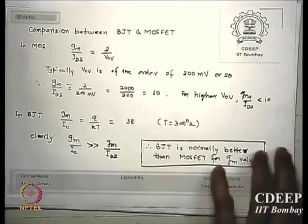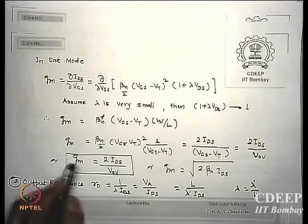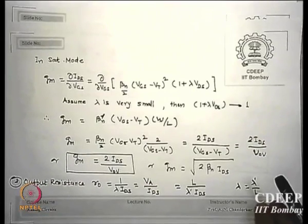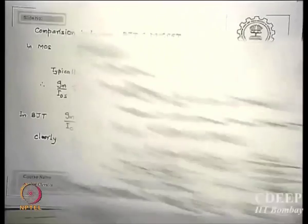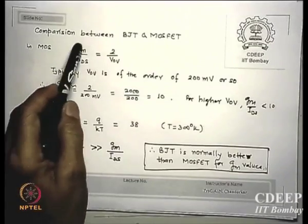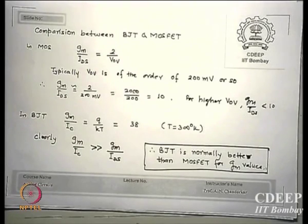Current gain does not exist for a MOSFET in the traditional sense because there is no DC gate current — the gate insulator is a perfect insulator with no DC current flowing from gate to source or substrate. In real life, gate leakage is a concern, but for this course IG = 0. Comparing MOSFET and BJT: for MOSFET, GM/IDS = 2/VOV, and for BJT, GM/IC = q/(kT), which at 300K equals approximately 38.